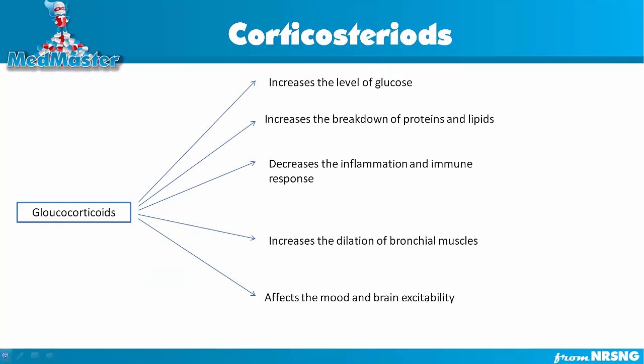Glucocorticoids — cortisol, corticosterone, and cortisone — increase the level of glucose in our body and increase the breakdown of protein and lipids. Basically, the body is preparing to produce more energy. They also decrease inflammation and immune response, decreasing white cell count and inflammatory mediators like histamine and bradykinins. They increase bronchial muscle dilation and can affect mood and brain excitability — increased glucocorticoids can make a person really labile to mood changes.